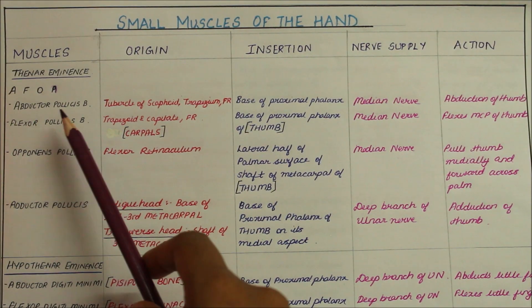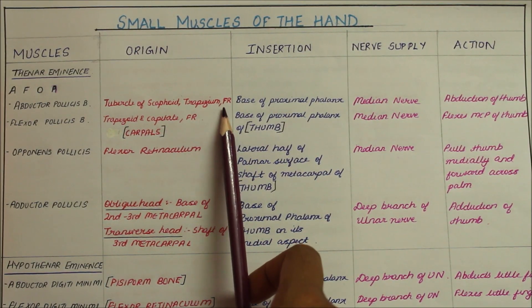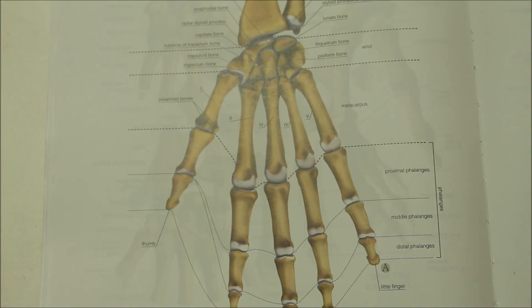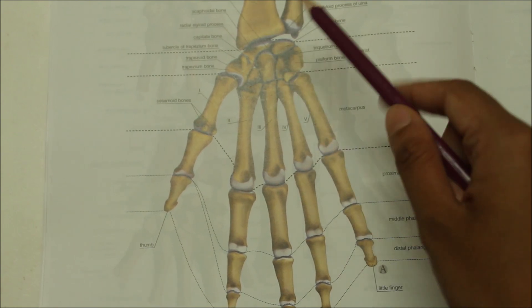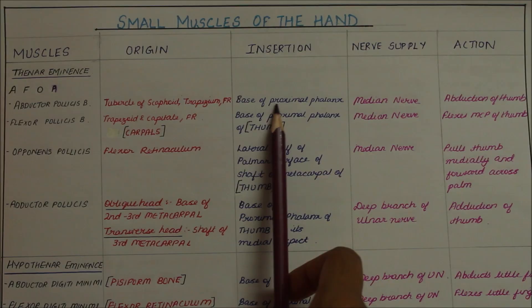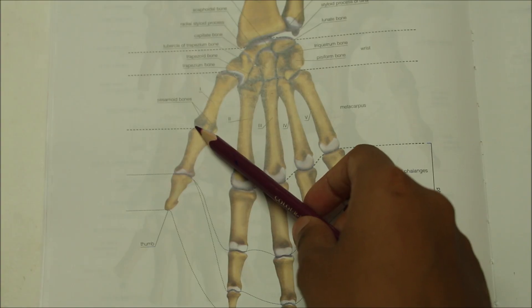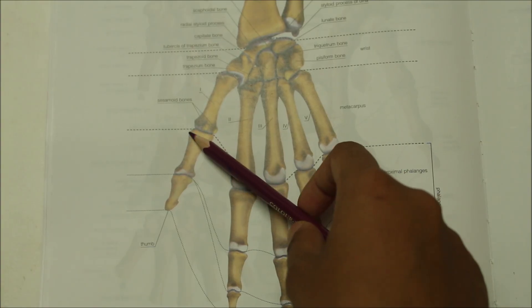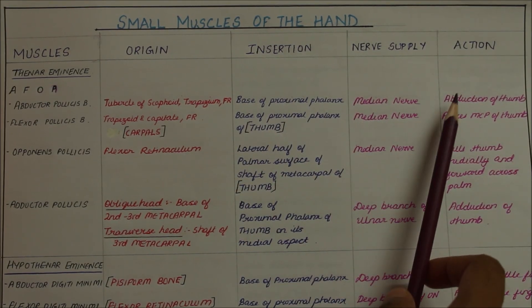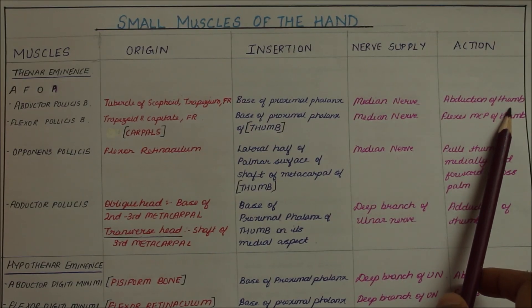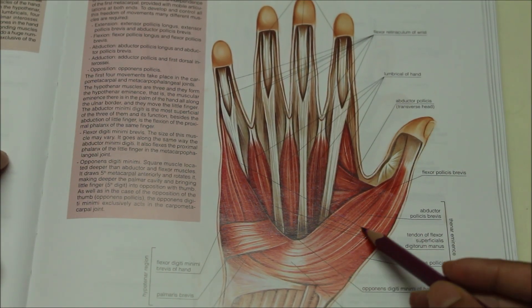First we have the abductor pollicis brevis. It originates from the tubercle of the scaphoid, trapezium, and the flexor retinaculum. It inserts into the base of the proximal phalanx. It is supplied by the median nerve, and its action is the abduction of the thumb.